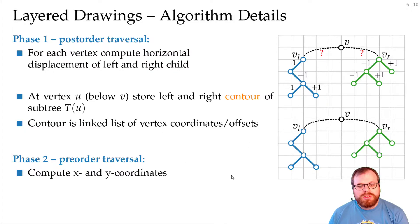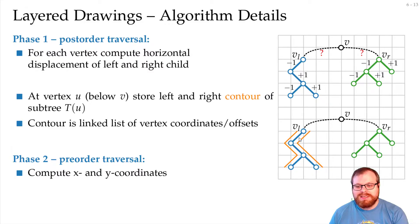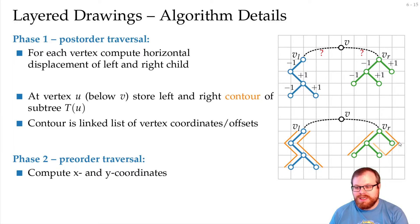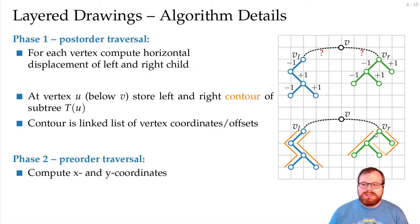The contour is just a list of vertices that form the left and the right boundary. If we look at this tree here, we start and then move along this path — the orange list is the right boundary and the orange list here is the left boundary. For the green subtree, we start from the bottom, and if there's another vertex to the right, we take that one instead. So this contour doesn't even have to be a path in the tree; it's just a list of some vertices that form the boundary.